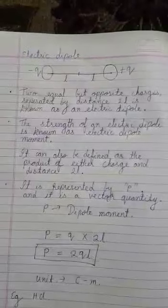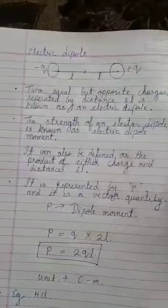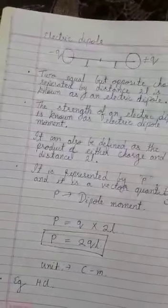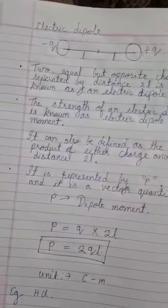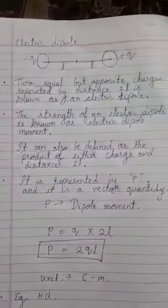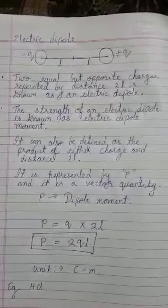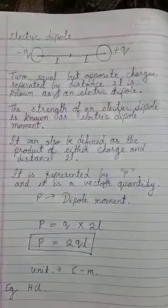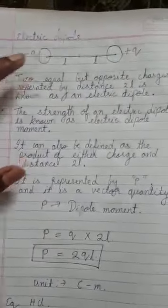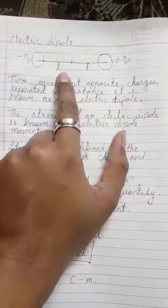If we are given two negative charges, the same diagram is made but we invert the arrows — the outward arrows become inward. Children, the next topic is electric dipole. 'Di' means two and 'poles' you already know — like north and south.